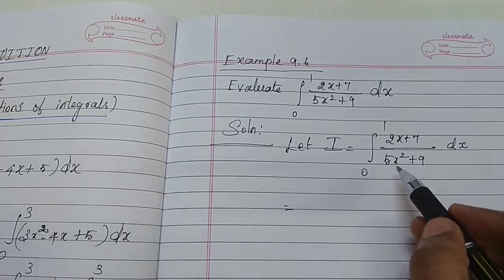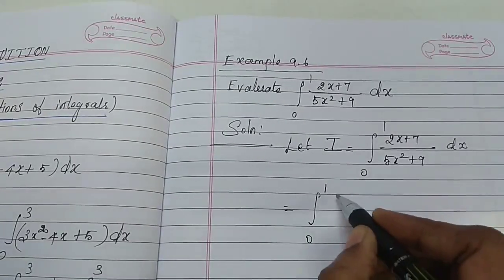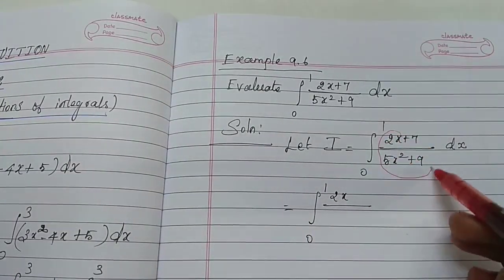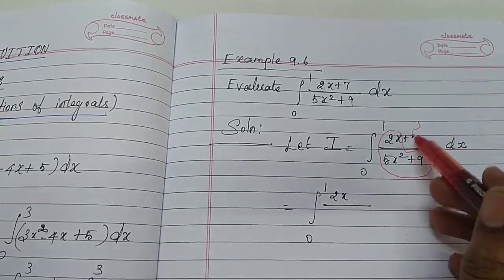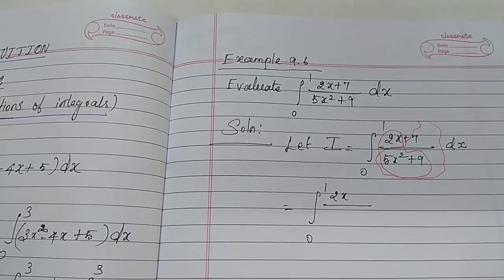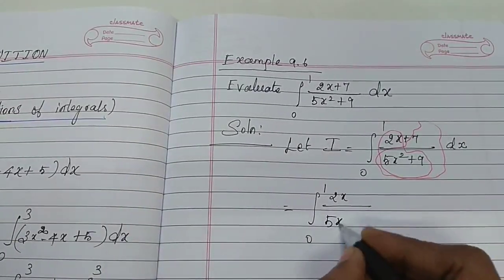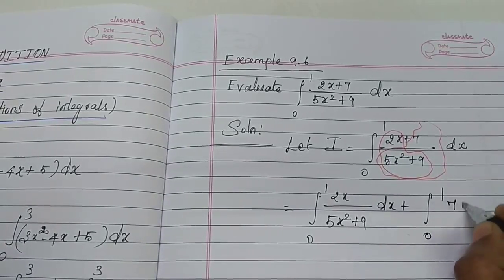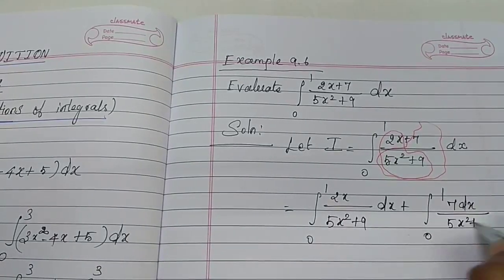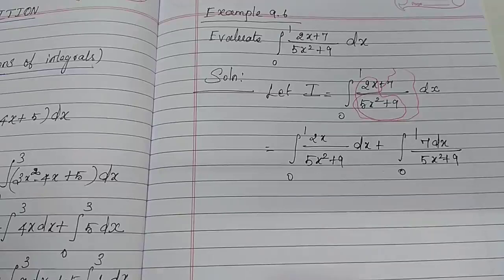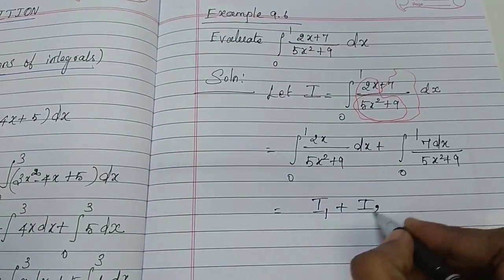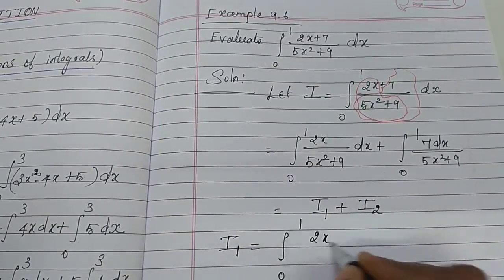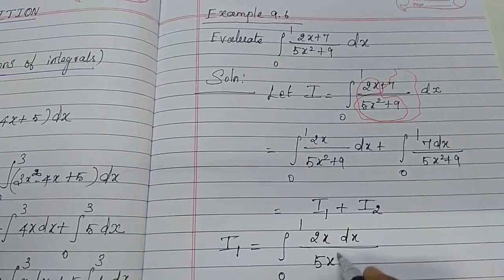Separate this as two terms: 2x divided by (5x squared plus 9), and 7 divided by (5x squared plus 9). So: integral 0 to 1 of [2x/(5x squared plus 9)] dx, plus integral 0 to 1 of [7/(5x squared plus 9)] dx. We denote these terms as i1 plus i2. First, calculate i1: integral from 0 to 1 of 2x dx divided by (5x squared plus 9).